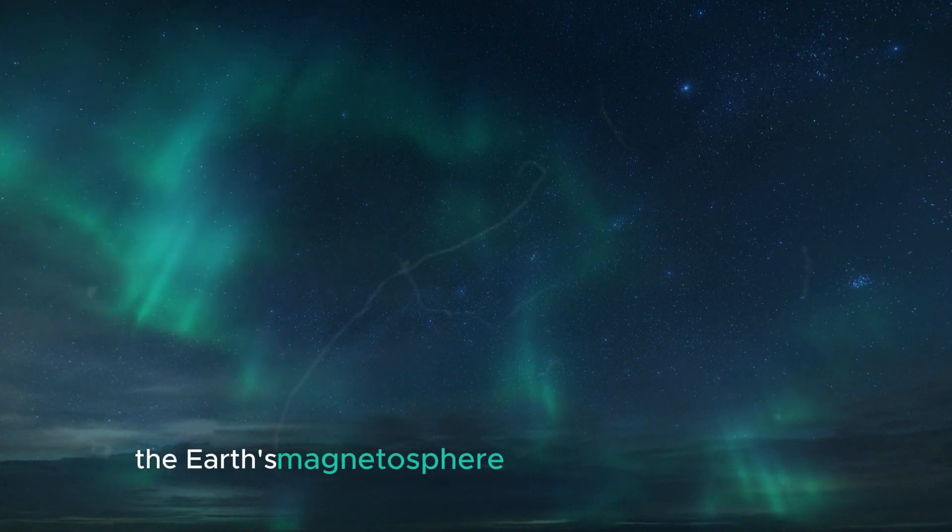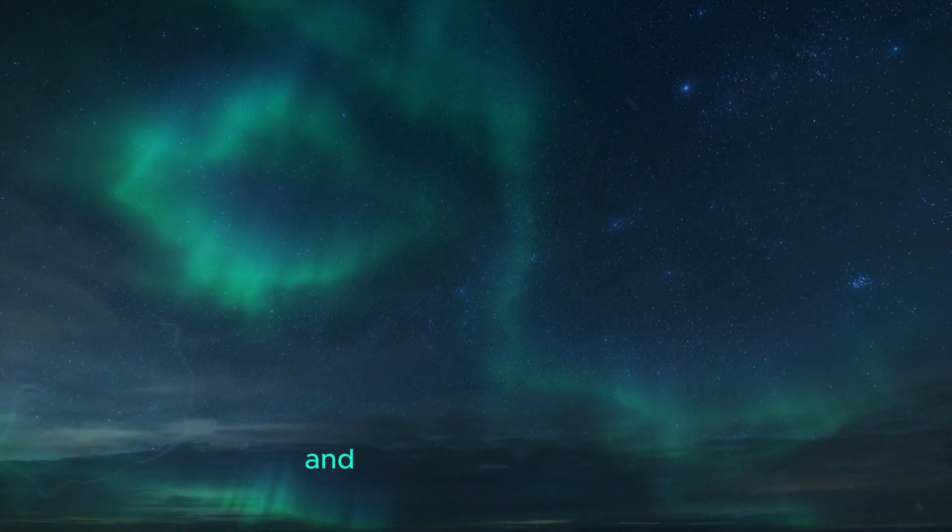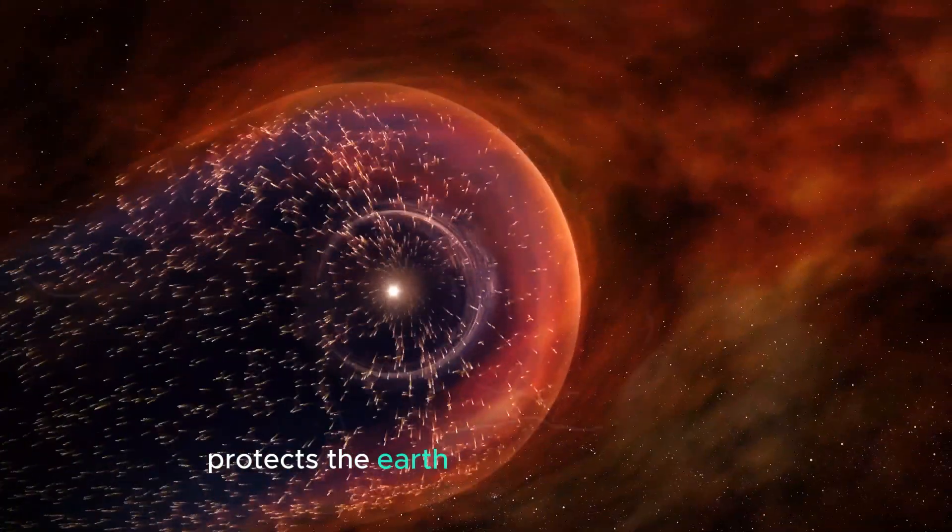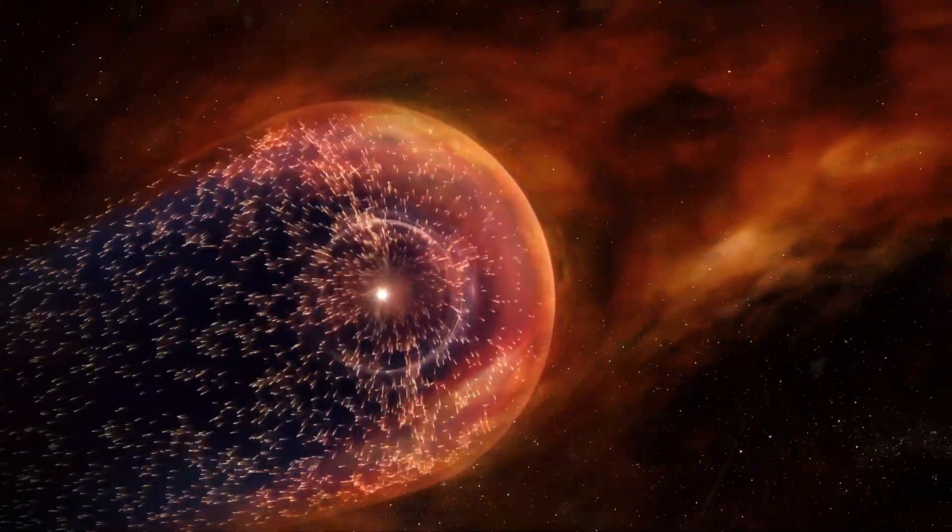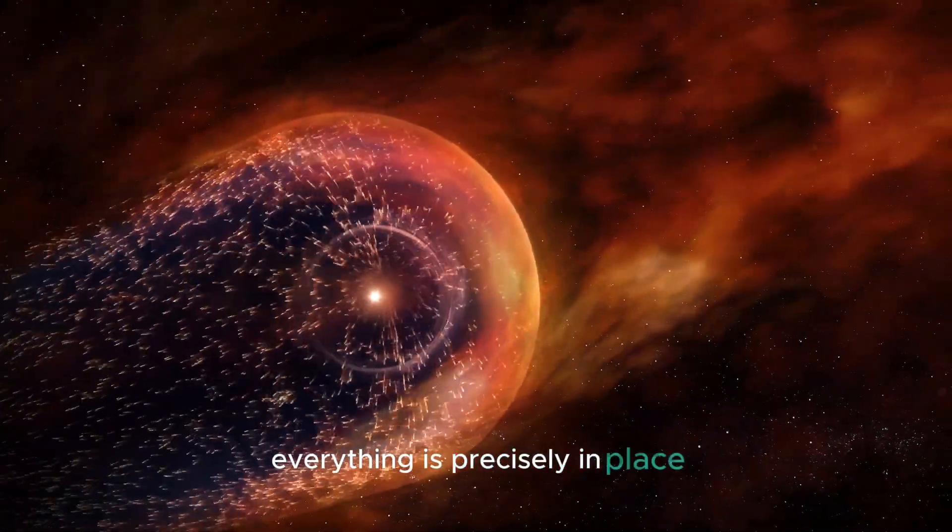The Earth's magnetosphere protects it from the sun, and the sun's heliosphere protects the Earth from cosmic radiation. What a magnificent autonomy. Everything is precisely in place.